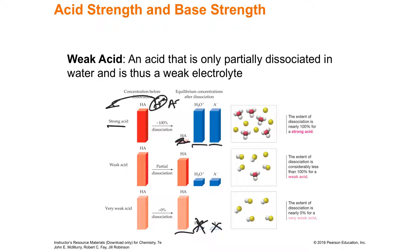A weak acid breaks apart only partially — just a little bit dissociates, giving a little hydronium and a little conjugate base, with mostly molecule left. A strong acid completely dissociates and its conjugate base is very weak. A very weak acid ends up with a very strong conjugate base. A weak acid makes a weak conjugate base.